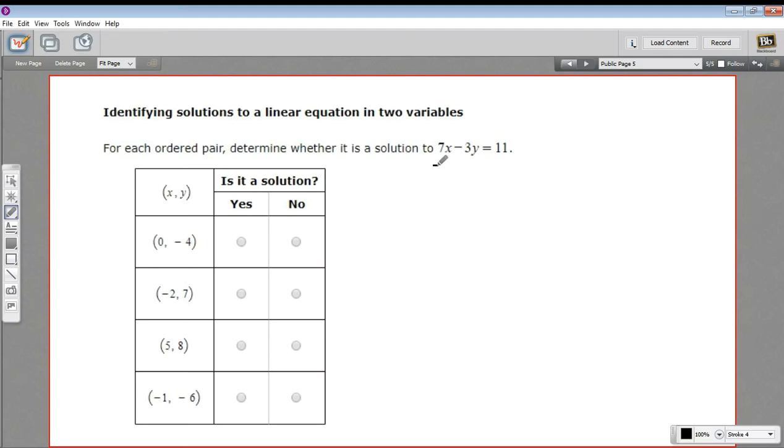In this problem, we have a linear equation, this guy right here, and we're being asked to tell whether these ordered pairs are solutions to that equation. Now remember, when you have an ordered pair, the first number is always the x, the second number is always the y, that's what this means right up here.